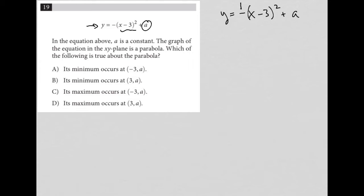First of all, having a negative sign out here in the front means that our parabola will face downward.